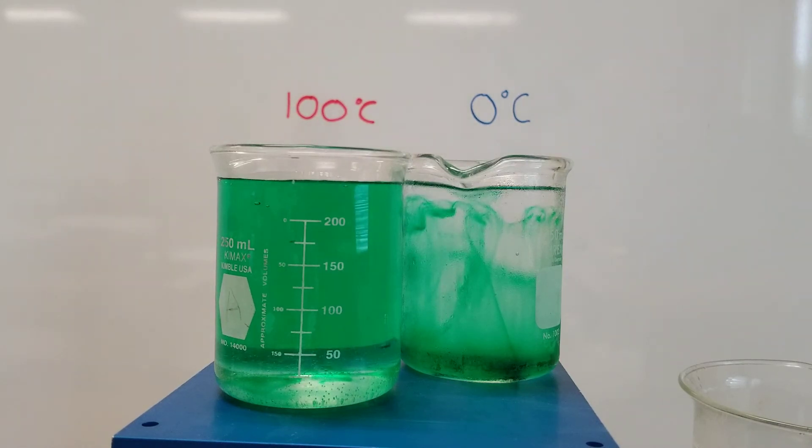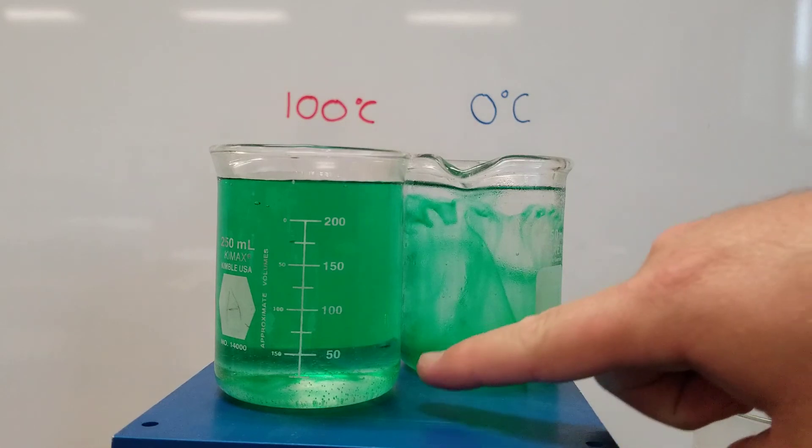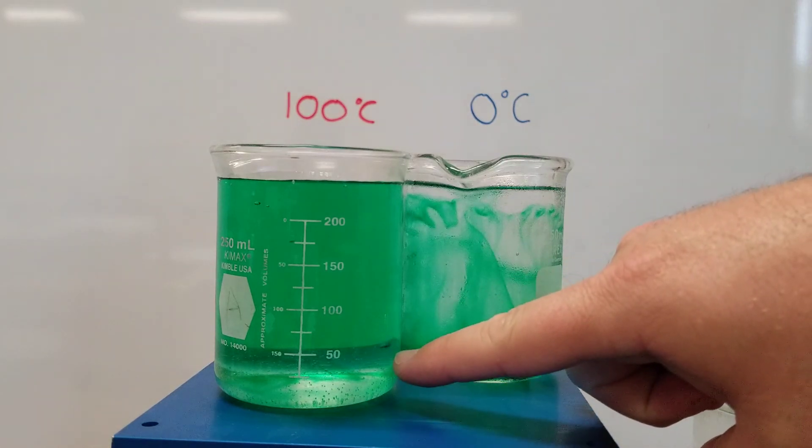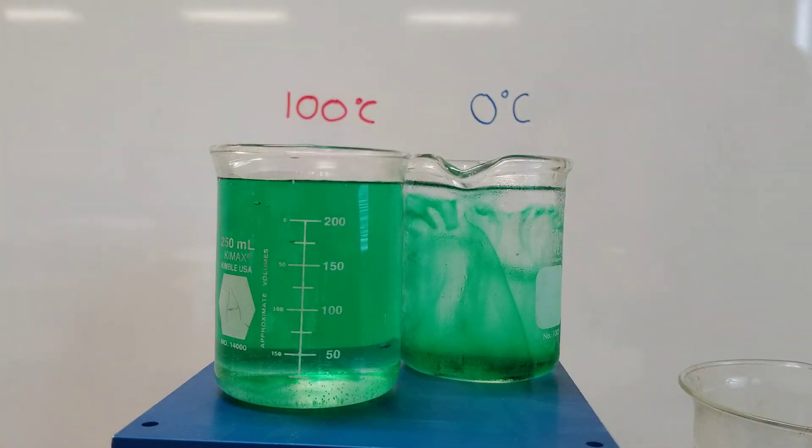And so after about two minutes of waiting, the beaker on the left is pretty much uniform. You're going to see a little bit of a color change here, but that's because of the blue lab jack underneath it.